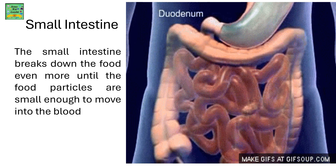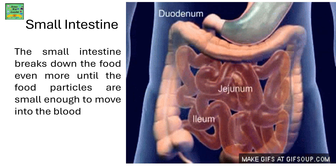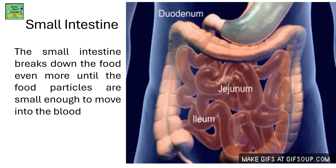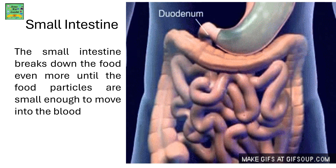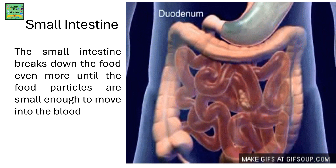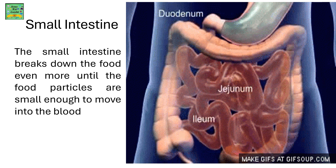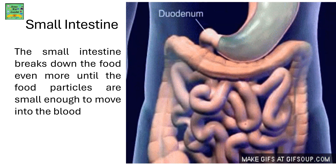Small Intestine. Next, the food goes into the small intestine. That's where the food breaks down a little bit more so that the food particles are small enough to move into the blood.